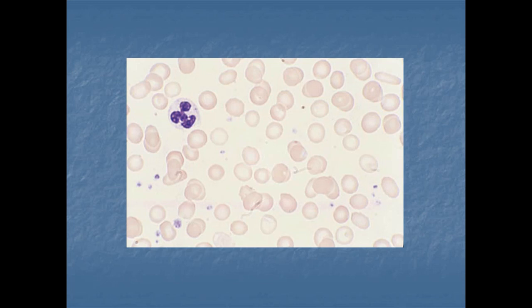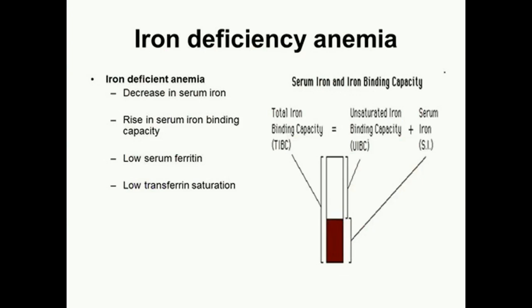Total iron binding capacity. Before we discuss total iron binding capacity, we should know the biochemical investigations done for diagnosing iron deficiency. These include serum iron, total iron binding capacity, and serum ferritin level. To detect early iron deficiency, it is also possible to examine bone marrow staining to detect the presence or absence of stored iron.